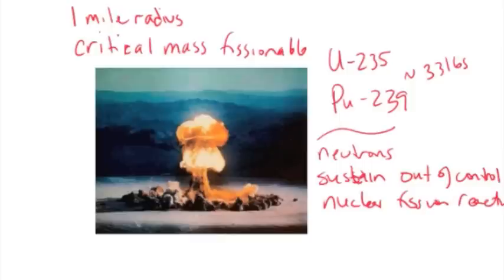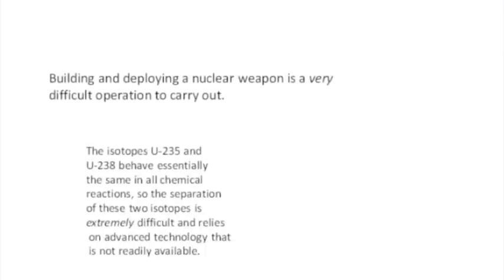We're going to talk a little bit today about how we get this fuel and how you bring the fuel together such that you can cause an uncontrolled chain reaction to occur to give you a nuclear explosion on the magnitude of destructing a one mile radius in area. First of all, building and deploying nuclear weapons is a very, very difficult and expensive operation to carry out. The isotopes, uranium-235 and 238, behave essentially the same in all chemical reactions. So just to separate them is extremely difficult and relies on advanced technology that's not really available to a lot of the developing nations in the world.